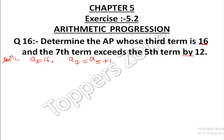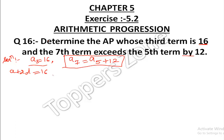The seventh term exceeds the fifth term by 12 means A7 = A5 + 12. For A3 we can write a + 2d = 16. For A7 we write a + 6d, and A5 is a + 4d plus 12.